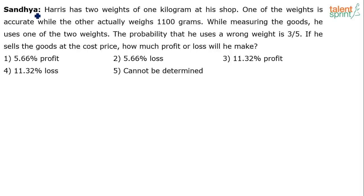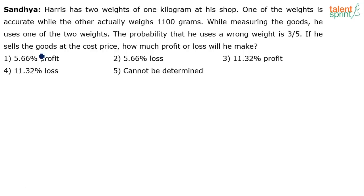This question was posted by Sandhya. It says Harris has two weights of one kilogram at his shop. One of the weights is accurate while the other actually weighs 1100 grams. While measuring the goods he uses one of the two weights. The probability that he uses a wrong weight is 3 by 5. If he sells the goods at the cost price, how much profit or loss will he make?